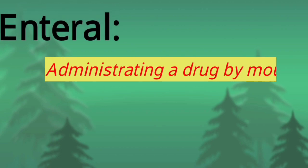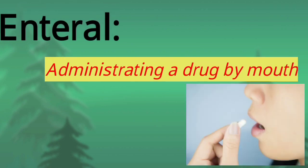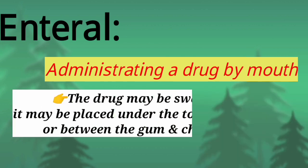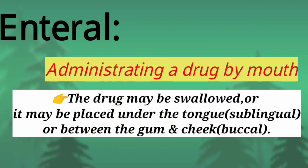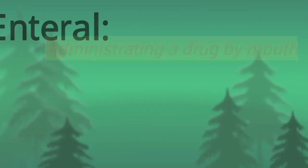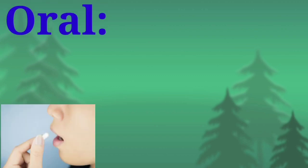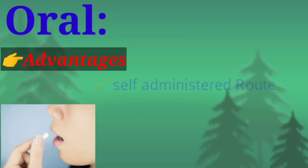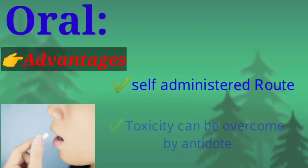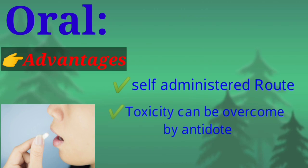The first route is the enteral route, which is administration of the drug into the body by mouth. When we administer a drug by mouth, the drug may be swallowed, the drug may be placed just beneath the tongue, or the drug may be placed just between the gums and the cheek. The route in which the drug is directly swallowed is the oral route.